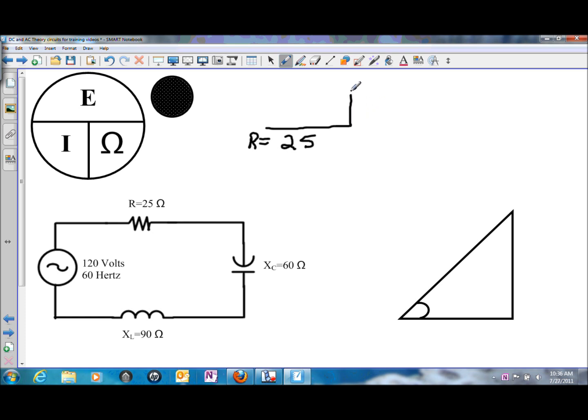In previous circuits, we have looked at inductive reactance as going up. In this case, we have an inductive reactance of 90 ohms. And capacitive reactance, we have 60 ohms of capacitive reactance.